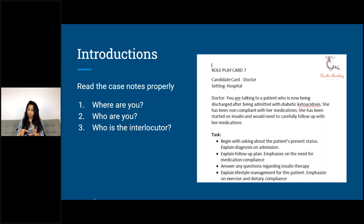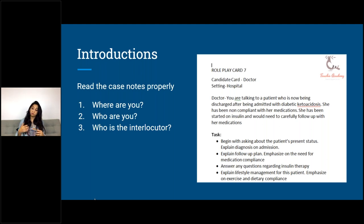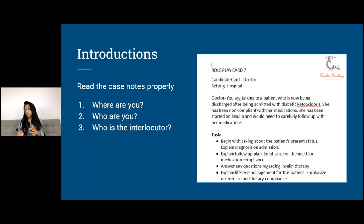When you see your roleplay card and have your three minutes to prepare, it's very important that you note down three things: where are you — what's the setting? For example, in this roleplay card it was a hospital. Some students made the mistake of saying 'what brings you here today?' or 'why have you come to the clinic today?' — but because it's a hospital ward and the patient is already there, asking 'what brings you to the hospital today' would be incorrect and they cut down your marks.